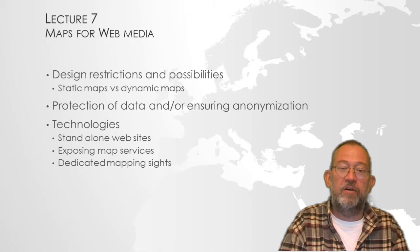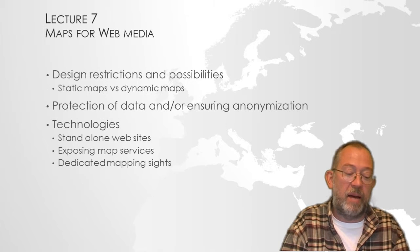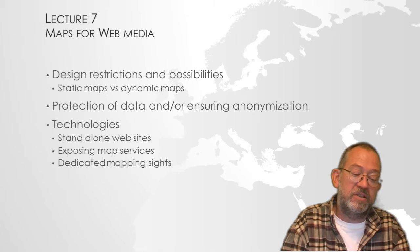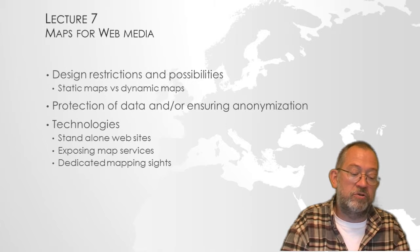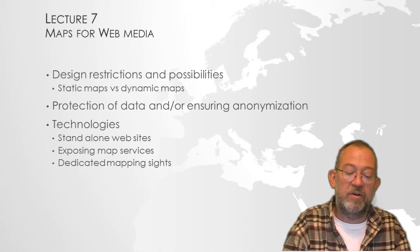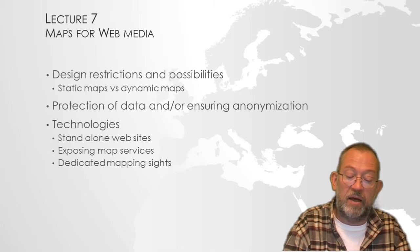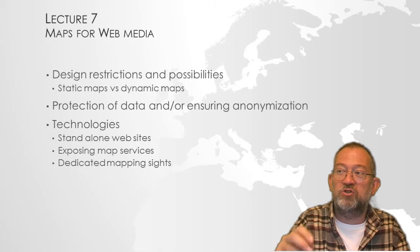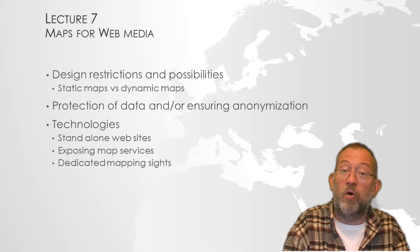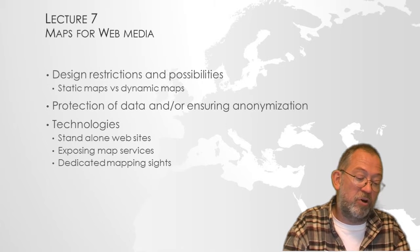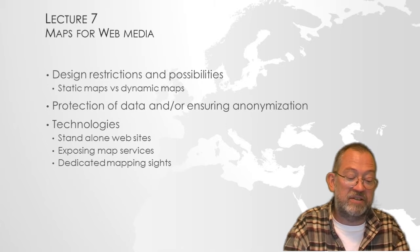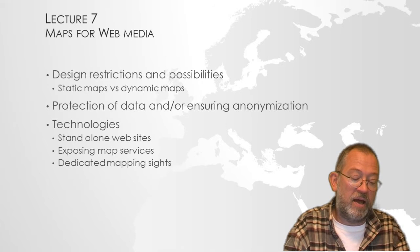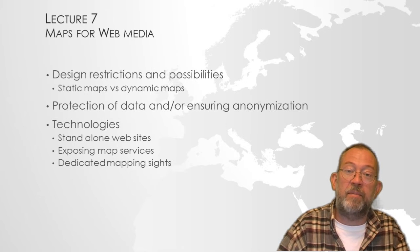In the seventh lecture, we will be talking about maps for the web — online maps. We will talk specifically about the restrictions and possibilities of online dynamic maps where you can zoom in as you want, as opposed to a static printed map. We will also talk about protecting data and ensuring anonymity so people can't zoom in and see exactly where protected flowers grow, for example. We will talk about the technologies used to make web maps — how to put a map as a standard image on a web browser window, how to use different data services, and dedicated mapping sites on the internet.